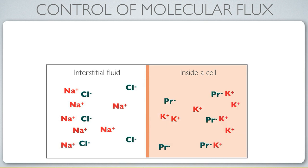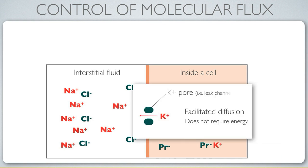Cell membranes are leaky for potassium, and that leakiness is facilitated by pores that are specific to potassium, so only potassium can traverse this transmembrane protein.